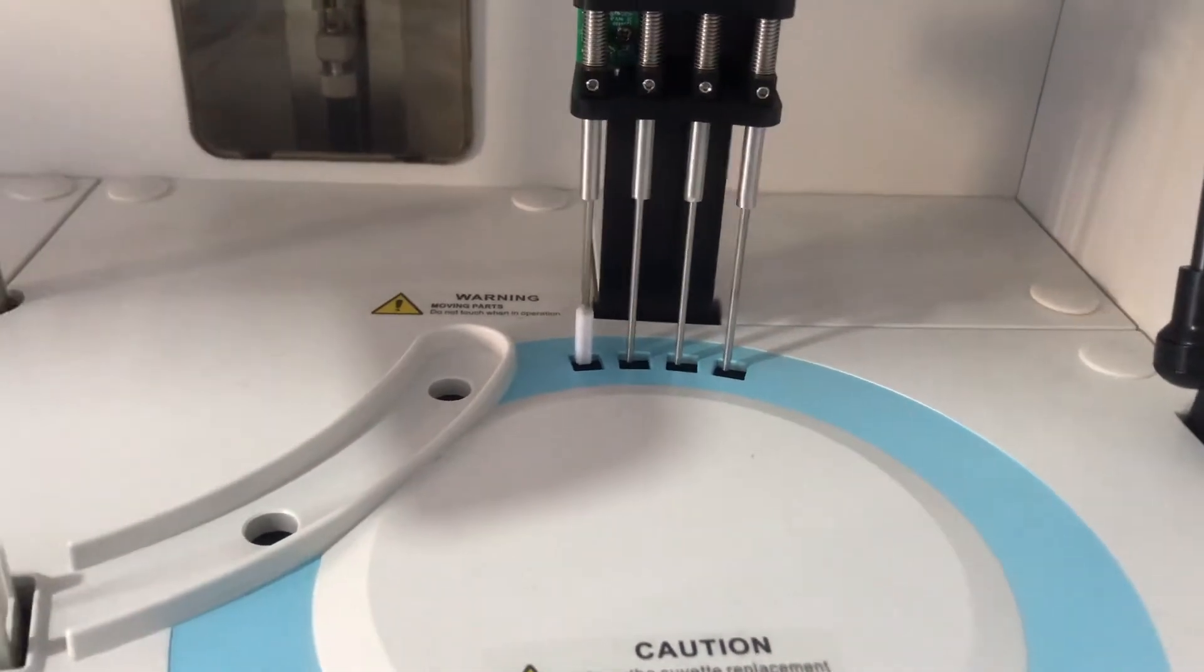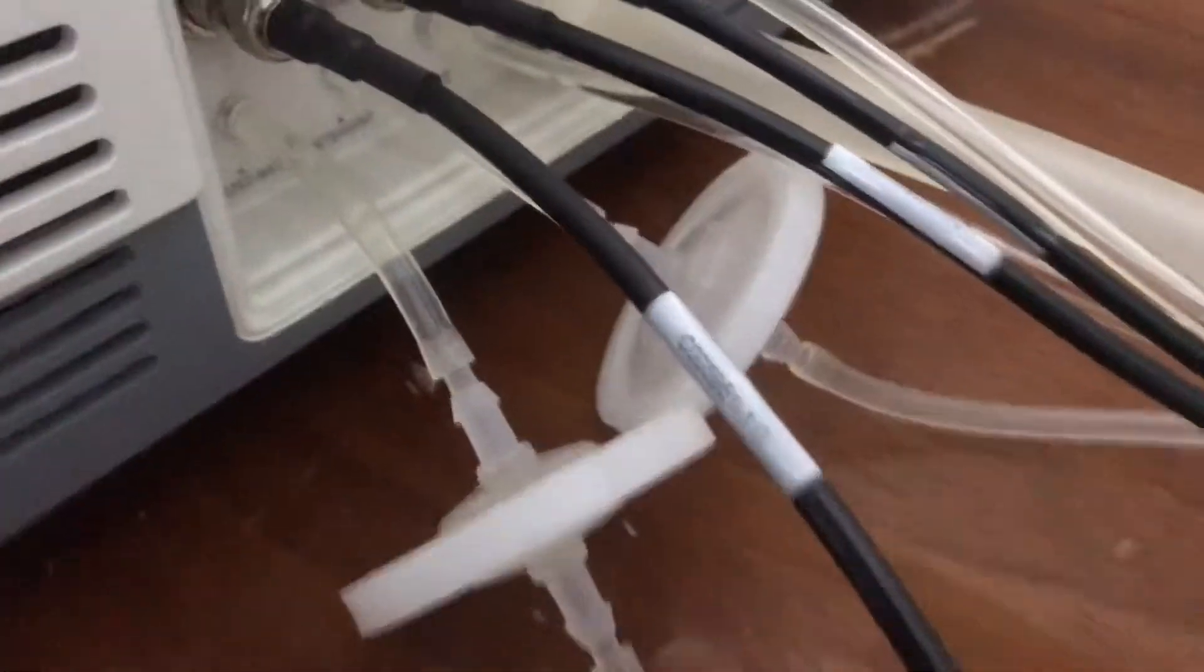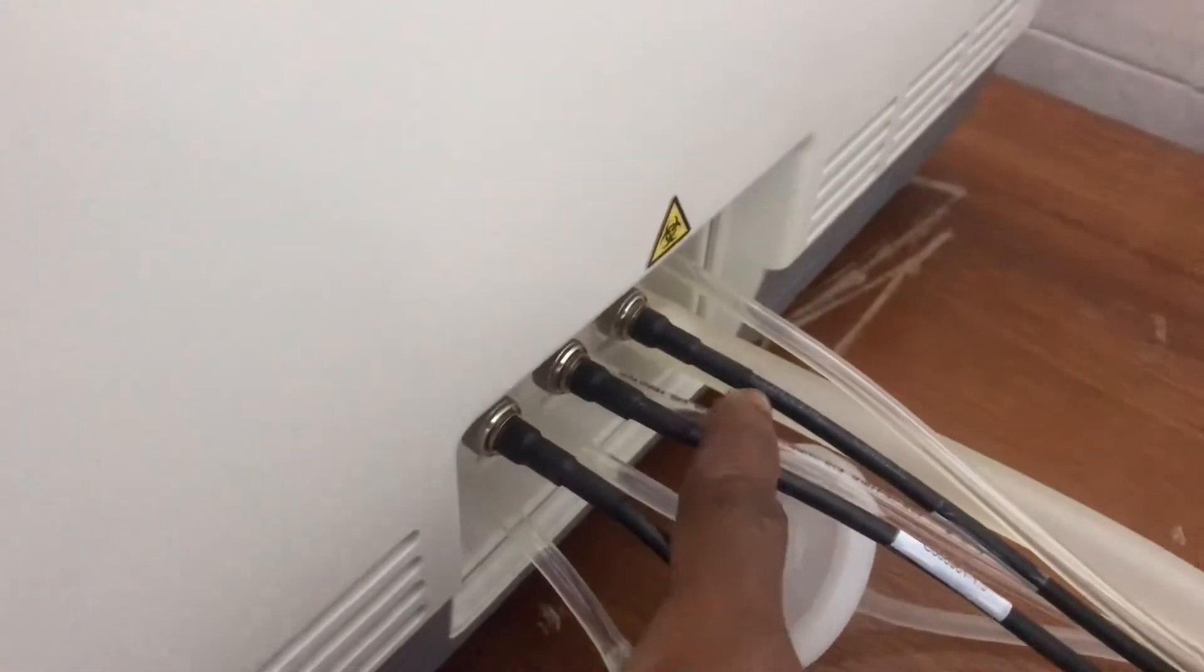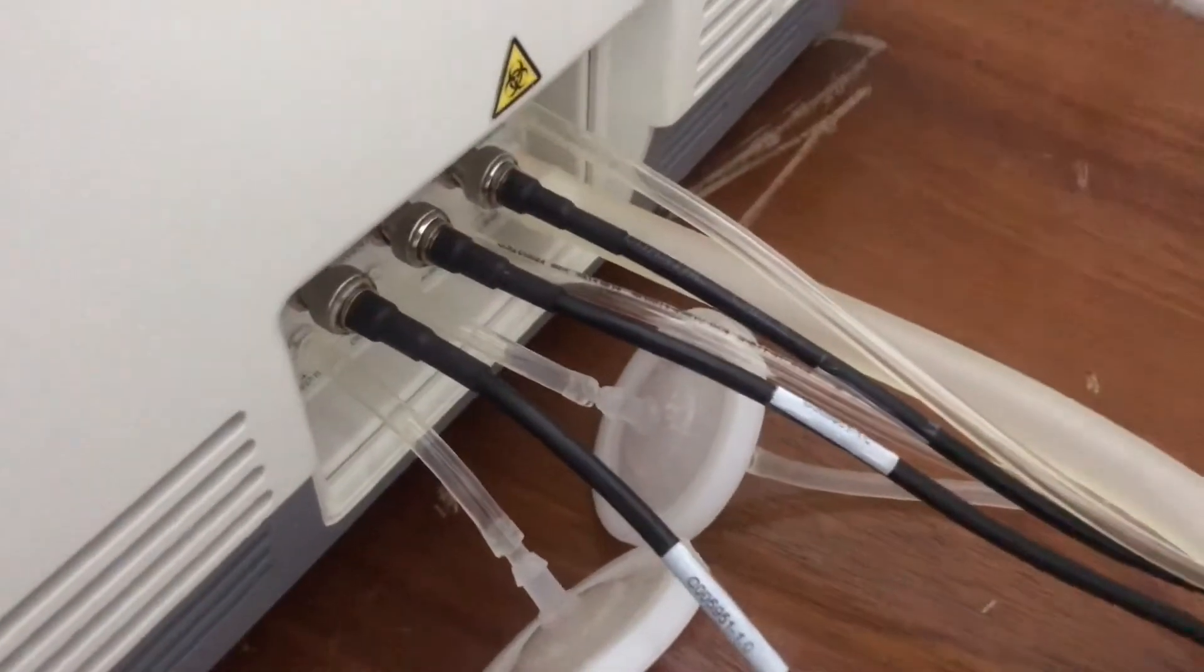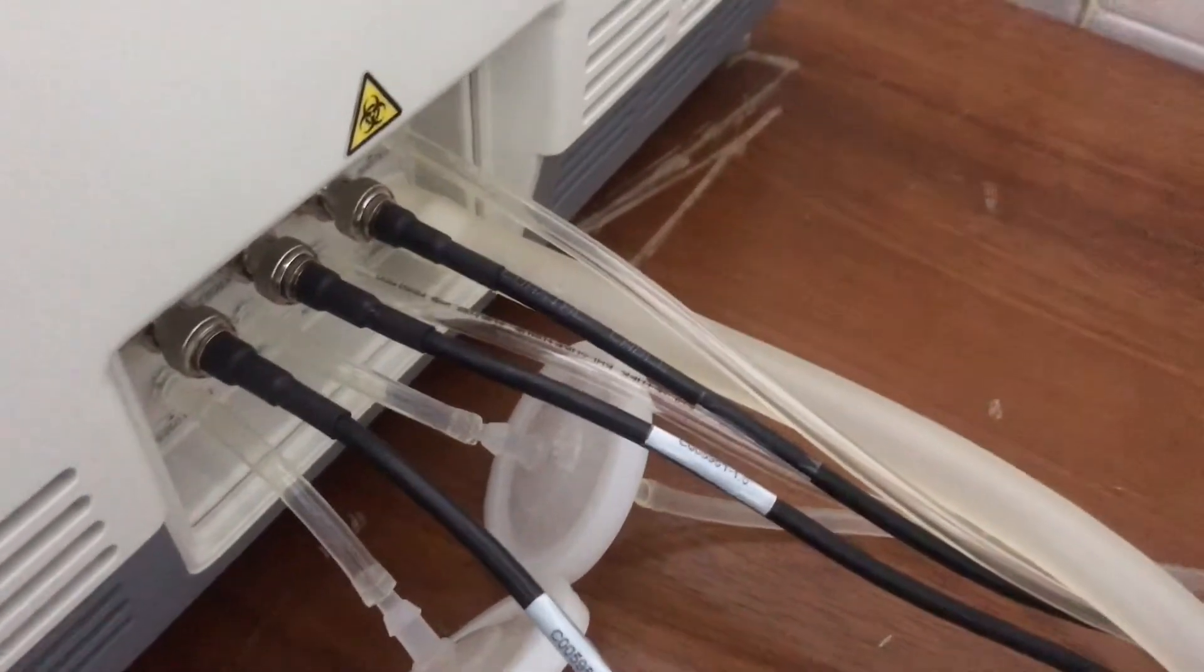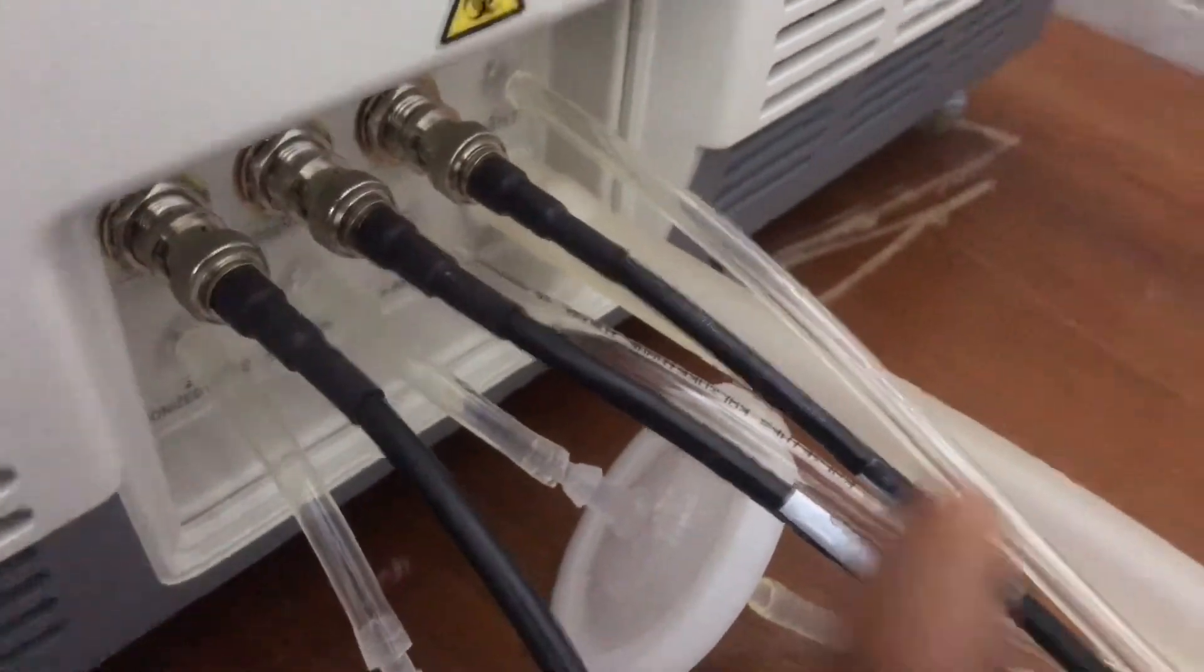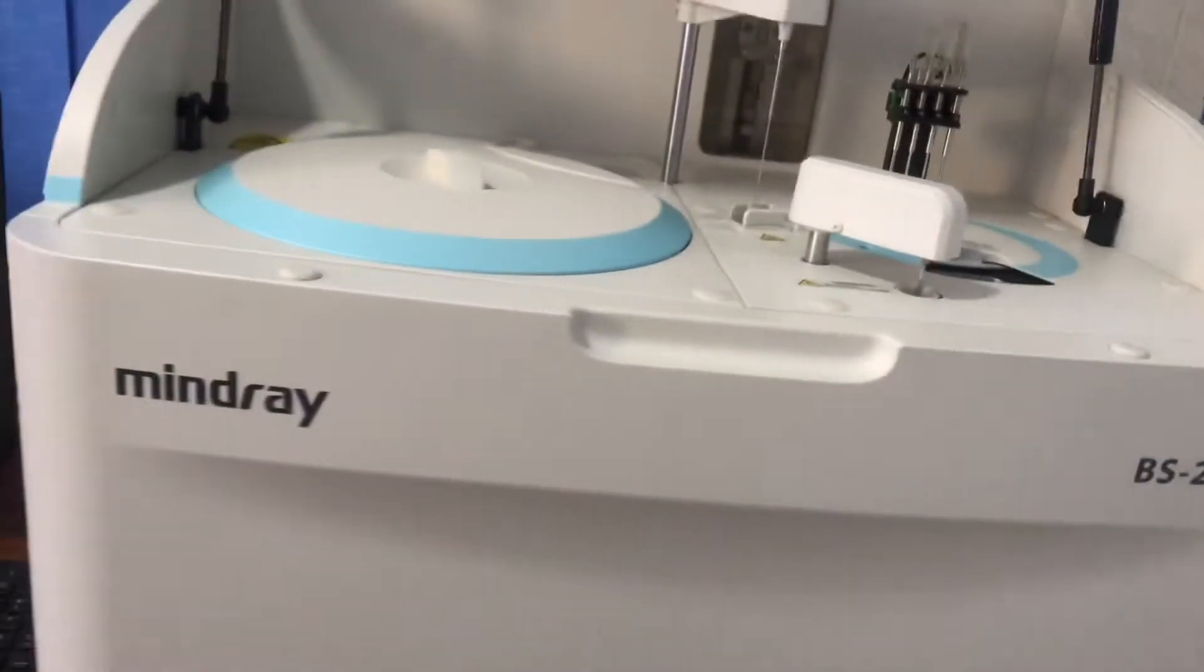It washes the cuvette with CD80 and ionized water which has been connected to two different containers. This is where you have the ionized water coming in, and then we have the CD80 also coming. These are basically sensors that help detect the level of CD80 or the ionized water, so it can tell you when they are in shortage. These are waste tubes. After washing, it will pass through this point and then come into the waste tube.